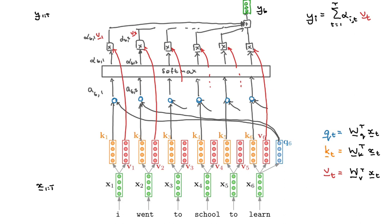We calculate the outputs at every time position. We will repeat this — starting from the first position — computing A1,1 with alpha1,1, A1,2 with alpha1,2, weighing the values differently for that position to get out vector Y1. We repeat this for all output positions in the self-attention layer.